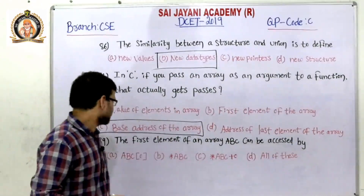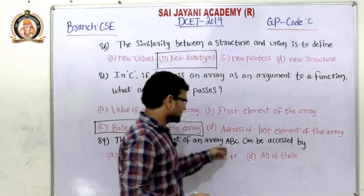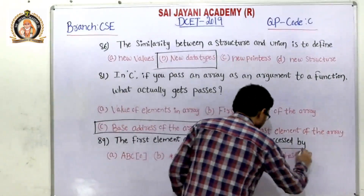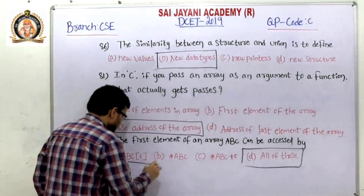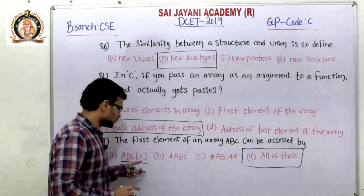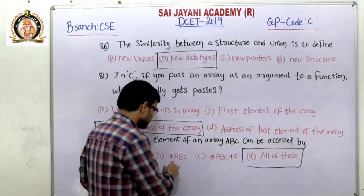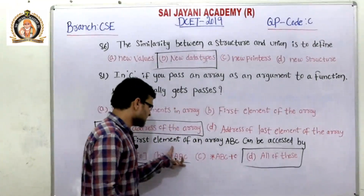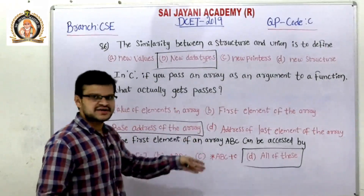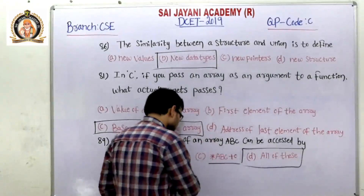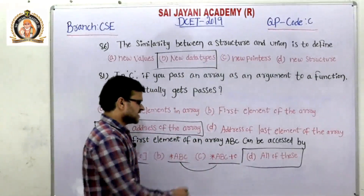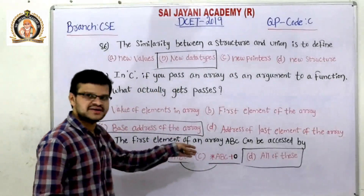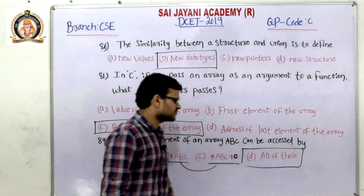Question number 89: the first element of array abc can be accessed by which option? Option D — all of these — is the right answer. By using abc[0], the 0th position always indicates the first element. Using star abc, since an array name acts as a pointer, star abc always fetches the first element. Similarly, star(abc + 0) means the 0th position, which is the first element. So for question number 89, option D — all of these — is the right answer.